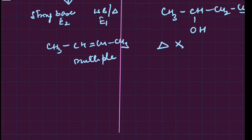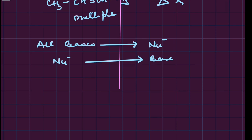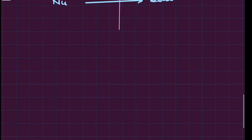How to make out when it is going to be elimination and when substitution? All bases can act as nucleophiles and nucleophiles can act as base, so memorizing will not help. Under which situation we will have bases and under which situation we have nucleophile - that will decide whether it is going to be elimination or substitution.